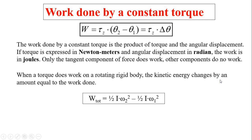So work done by a constant torque: w equals torque times delta theta. The work done by a constant torque is the product of torque and angular displacement. If torque is expressed in newton-meters and angular displacement in radians, the work is in joules. Only the tangential component of force does work. Other components do no work.